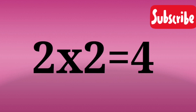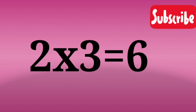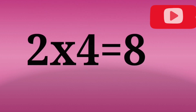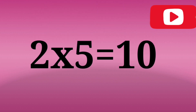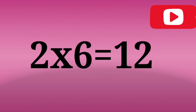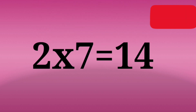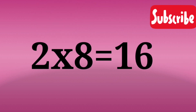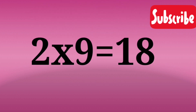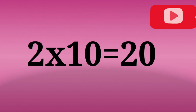2 1's are 2, 2 2's are 4, 2 3's are 6, 2 4's are 8, 2 5's are 10, 2 6's are 12, 2 7's are 14, 2 8's are 16, 2 9's are 18, 2 10's are 20.